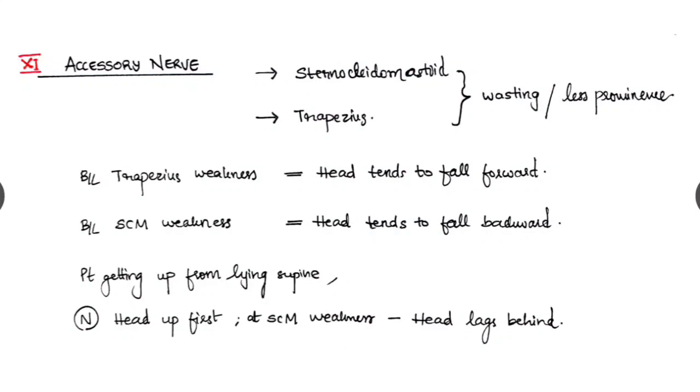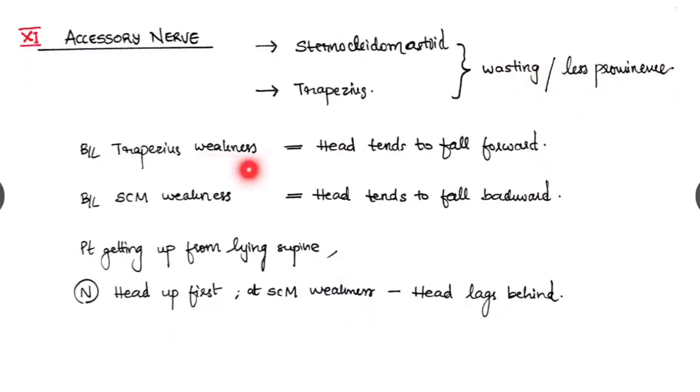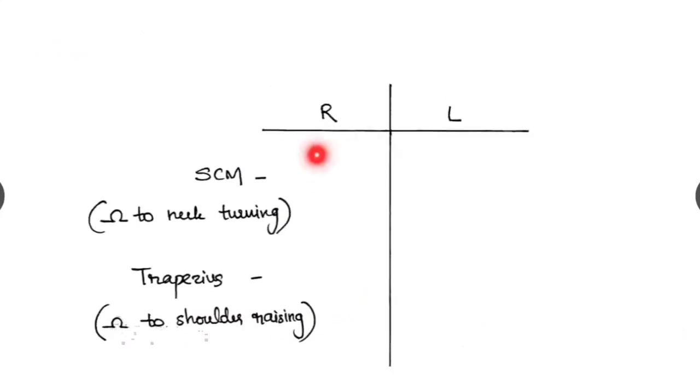Eleventh one is the accessory nerve. It is innervating the sternocleidomastoid and the trapezius. So look for wasting or less prominence of these muscles. In case of bilateral trapezius weakness, the head tends to fall forward. In case of bilateral sternocleidomastoid weakness, the head tends to fall backward. Look while the patient is getting up from supine position. Normally the head will rise up first, but at sternocleidomastoid weakness, the head lags behind. And this we have to tabulate it right and left, with sternocleidomastoid testing by giving resistance to the neck turning, and the trapezius by giving resistance to the shoulder raising.